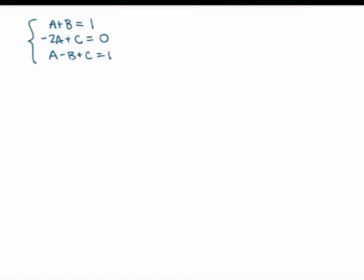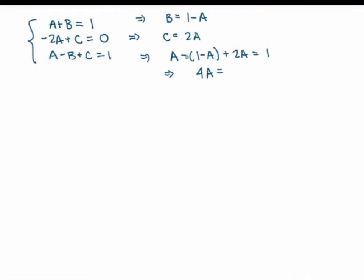It's a pretty easy system. The second equation implies C equals 2A, and the first implies B equals 1 minus A. Substituting into the third equation: A minus (1 minus A) plus 2A equals 1, which gives 4A minus 1 equals 1, so A equals one half. Substituting back gives C equals 1 and B equals one half.